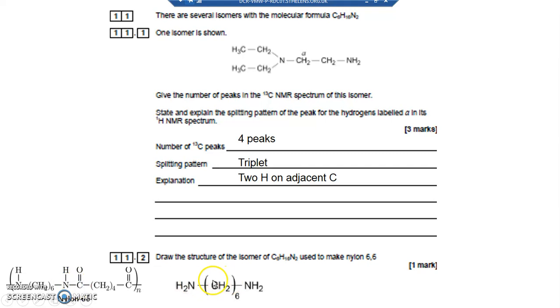So that's the formula of the monomer here, used to make nylon 6-6, either with another monomer with six carbons in and two carboxylic acid groups at either end, or two acyl groups at either end.